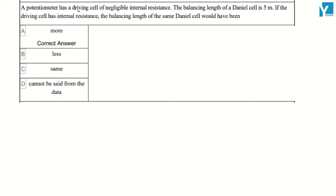A potentiometer has a driving cell of negligible internal resistance. The balancing length of the Daniel cell is 5 meters. If the driving cell has internal resistance, the balancing length of the same Daniel cell would have been what?